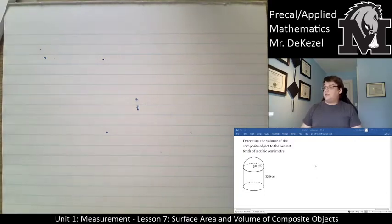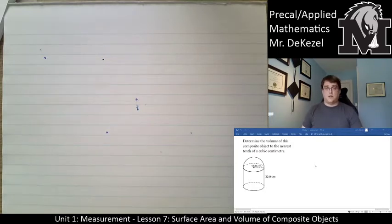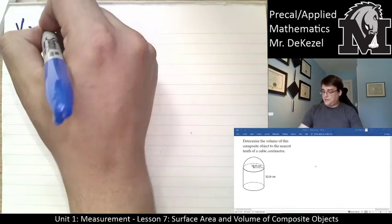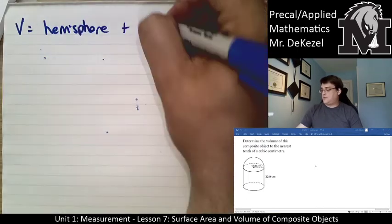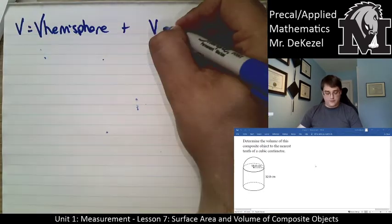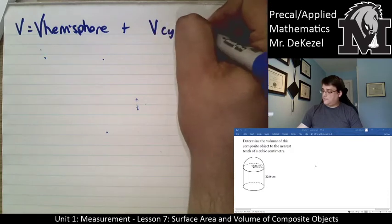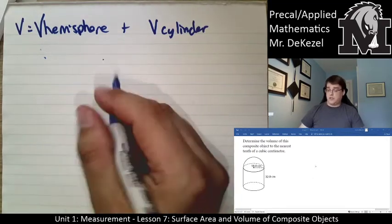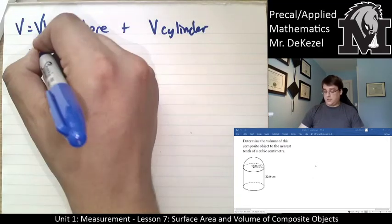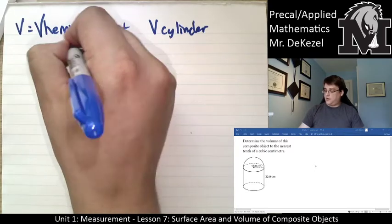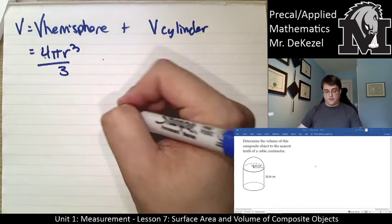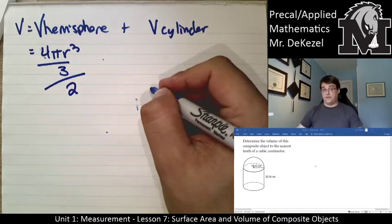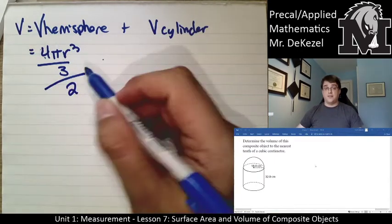We're going to determine the volume of this composite object to the nearest tenth of a cubic centimeter. In this one, it looks like we have a cylinder and also a hemisphere. So the volume of a hemisphere plus the volume of a cylinder. The volume of a hemisphere is 4πr³ divided by three, and then divided by two again, because we've only got half — that's the volume of a sphere divided by two.